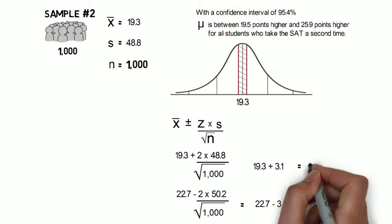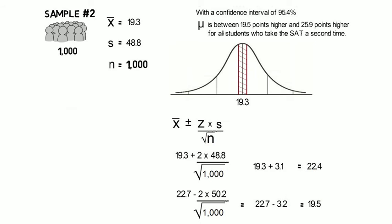Then we take our 19.3 and subtract 2 times 48.8, divided by the square root of 1,000. And that gives us the lower bound, 19.3 minus 3.1, or 16.2.